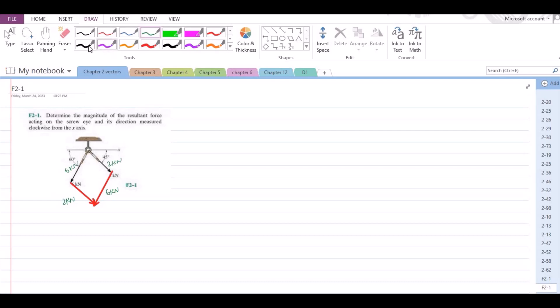Now, the resultant is drawn from the tail of the two vectors to the opposite end.